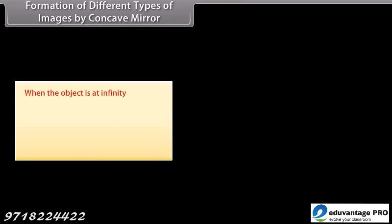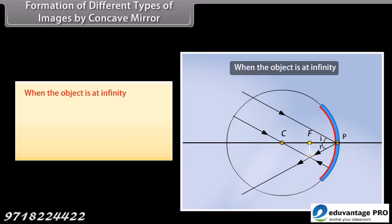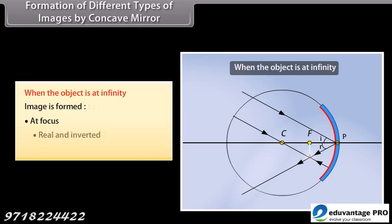When the object is at infinity, the image is formed at the focus — real and inverted, and smaller than the object.